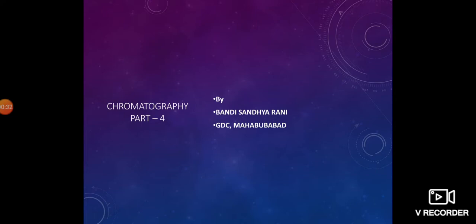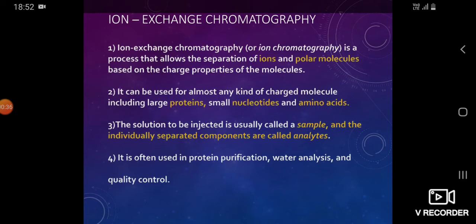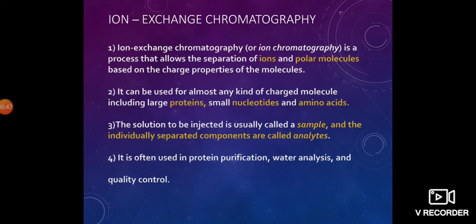Now we are going to discuss ion exchange chromatography. Ion exchange chromatography is a process that allows the separation of ions and polar molecules based on the charge properties of the molecules. For example, this is a technique for separating a mixture of charged particles such as cations like K+, Na+, Ca2+, Cu2+, and lanthanides, and anions like Cl−, Br−, I−, and amino acids, proteins.